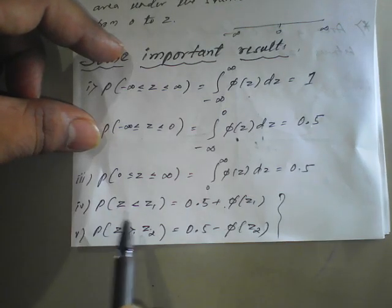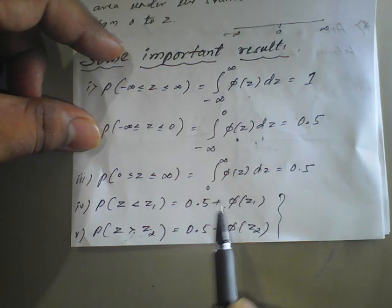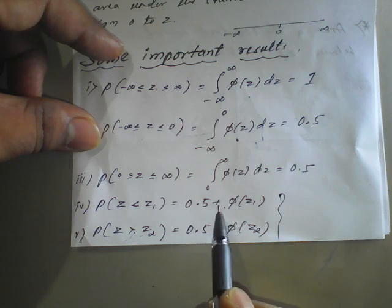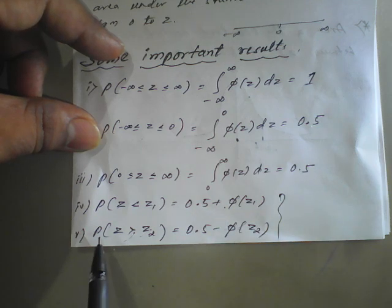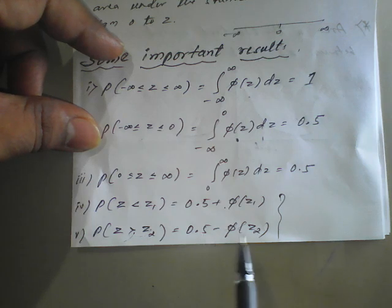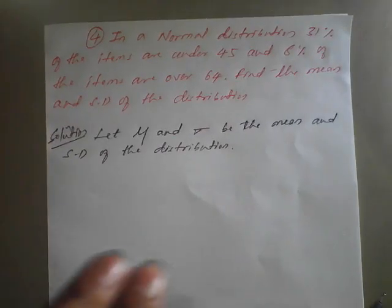P(Z < z₁) is equal to 0.5 plus φ(z₁), and P(Z > z₂) is equal to 0.5 minus φ(z₂). With the help of these formulas I will take the next question.